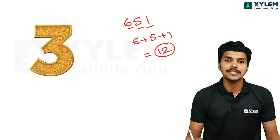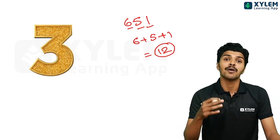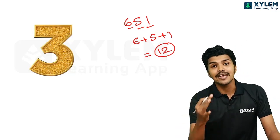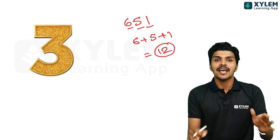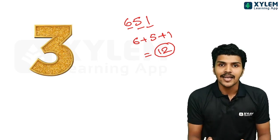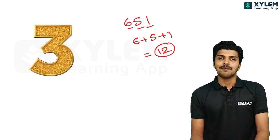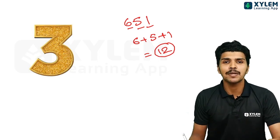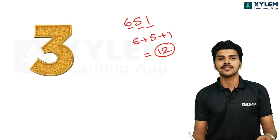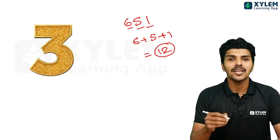Sum of digits — if the sum of digits is a 3 multiple, the number is a 3 multiple. What are the numbers that are 3 multiples?